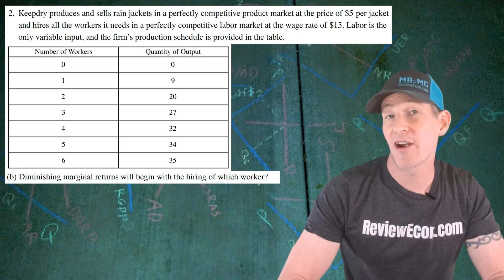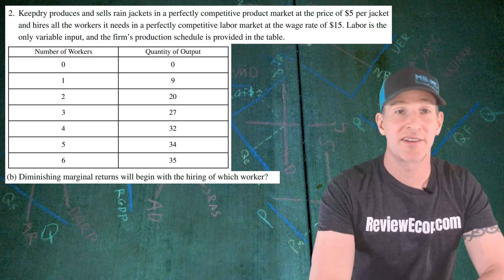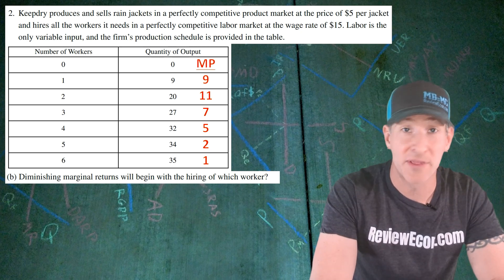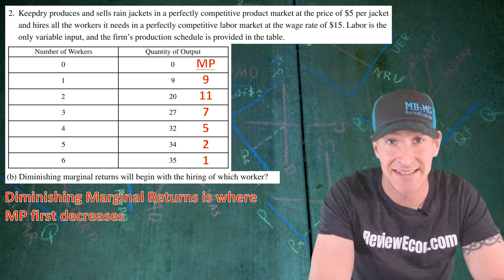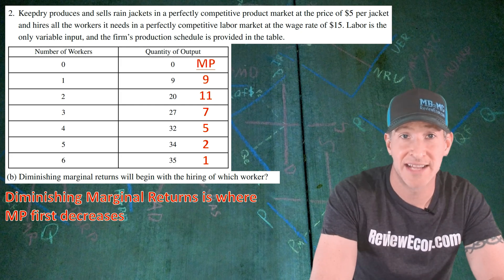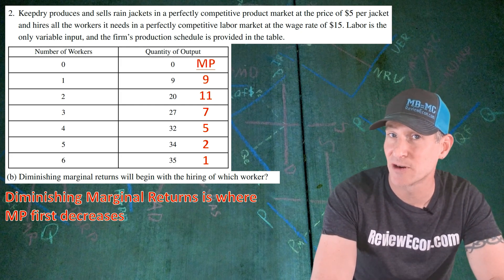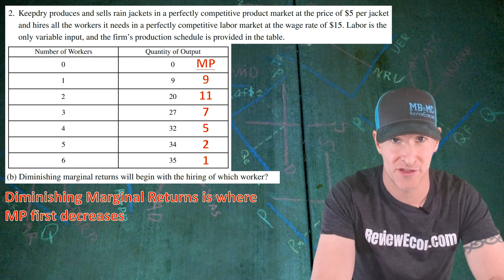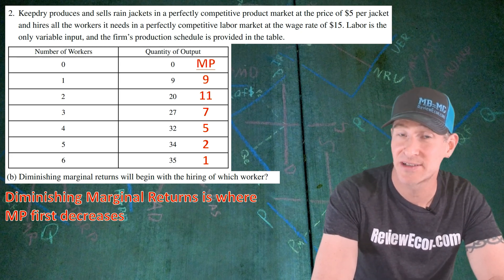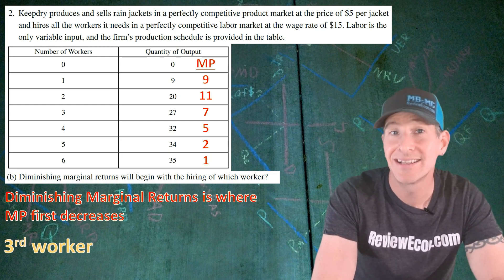For Part B, we are asked on which worker diminishing returns set in. To figure this out, we have to calculate the marginal product of each worker on the table. Diminishing marginal returns sets in on the first worker where marginal product falls. The marginal product for the first worker is 9, it's 11 for the second worker, and it's down to 7 on the third worker. Since the third worker is the first time we see marginal product decrease, the answer is the third worker. If you state that, you get your next point.